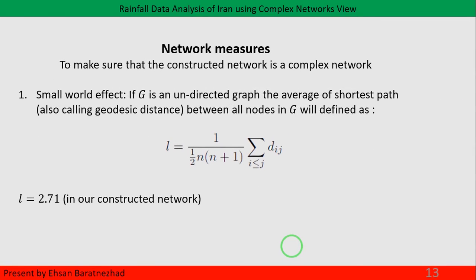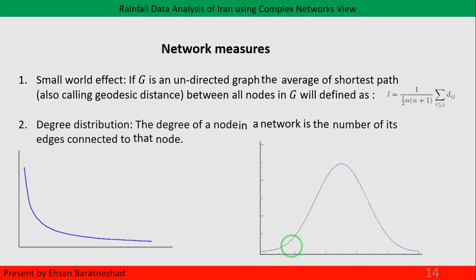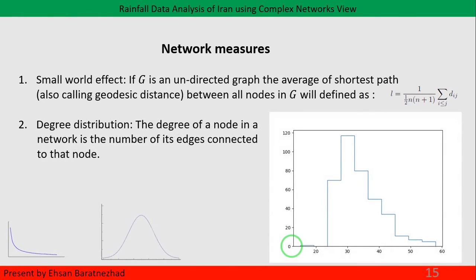We want to find the communities in the network. Community structure is one of the properties of complex networks, so we should make sure the network we built is indeed a complex network. The first property we check is the small world effect — that means you can move from any node to every other node in the network via a short path. The average shortest path in our network was 2.71, so it has the small world effect. The degree distribution of complex networks is extremely right-skewed and far from a binomial distribution. As you can see, the degree distribution of our network is right-skewed and has a heavy tail.